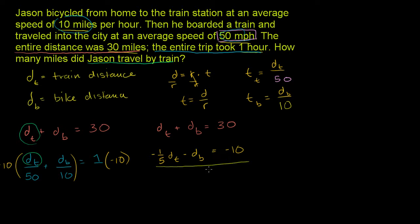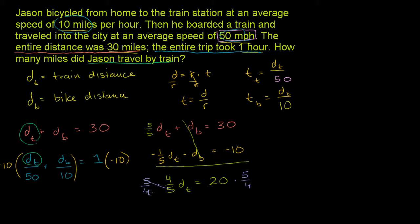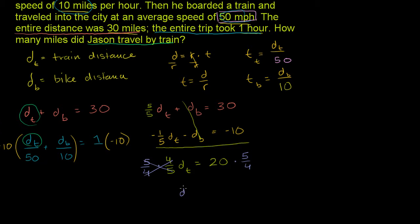Adding the two equations, the db terms cancel. On the left we have dt minus one-fifth dt, which is five-fifths minus one-fifth, giving four-fifths dt. On the right: 30 plus negative 10 equals 20. So four-fifths times dt equals 20. Multiplying both sides by 5 over 4, we get dt equals 20 times 5 fourths. That's 100 over 4, which equals 25. So the distance traveled by train is 25 miles.